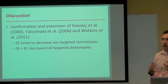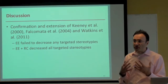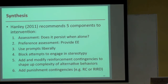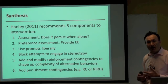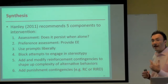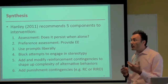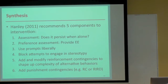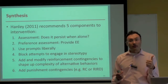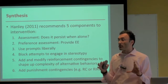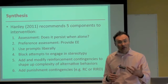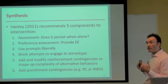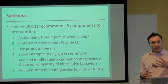So where does this leave us? Back in 2011, Hanley came up with five recommendations for the treatment of stereotypy. First: assessment. We need to ask whether the behavior persists when the person is alone — if it does, that's evidence of automatic reinforcement. We can assess this through the QABF screener, which is not a protected or restricted assessment — people with undergraduate degrees can implement it — and if that fails, follow with a functional analysis.